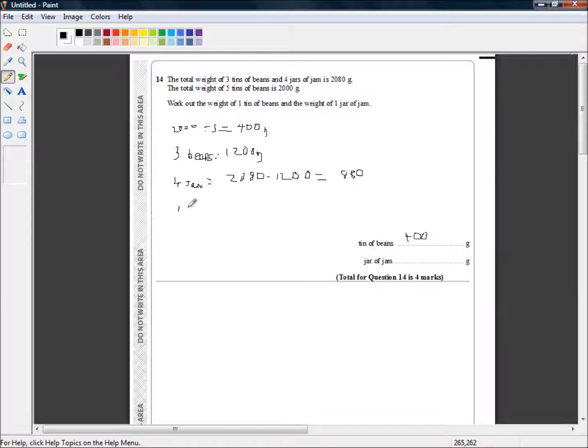So one jar of jam... I really cannot write, this is why I like to type. One jar of jam is equal to 880 divided by 4, which is just 8 divided by 4 is 2, so it's 220. And there we go.